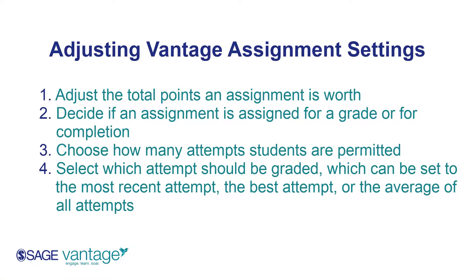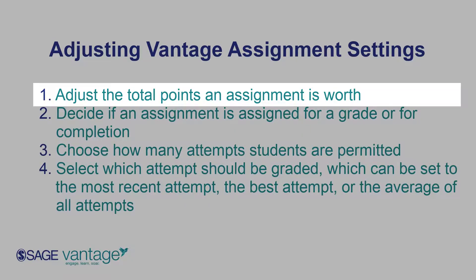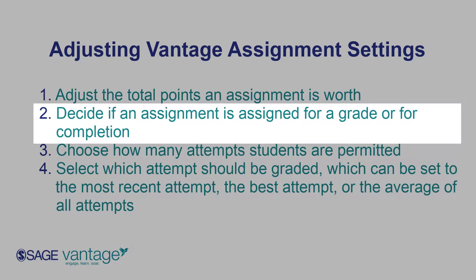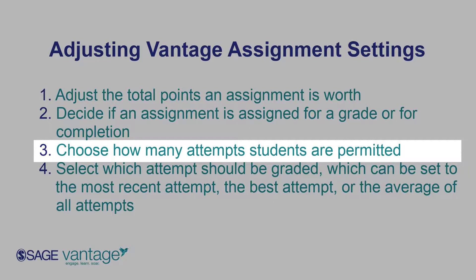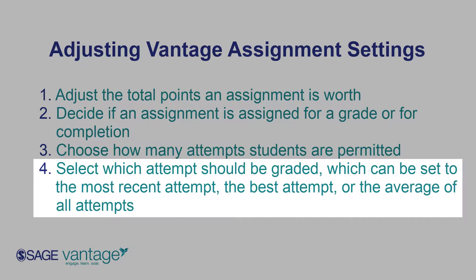Within your course assignment settings, you can: 1. Adjust the total points that an assignment is worth. 2. Decide if the assignment is graded for completion. 3. Choose how many attempts students are permitted. 4. Select which attempt should be graded, which can be set to the most recent attempt, the best attempt, or the average of all attempts.